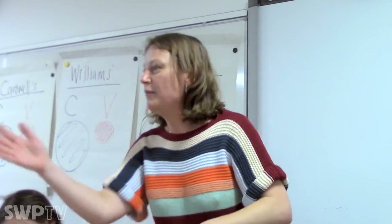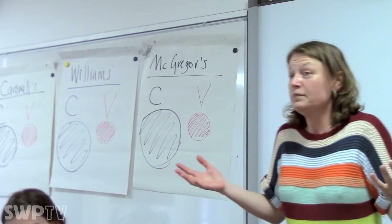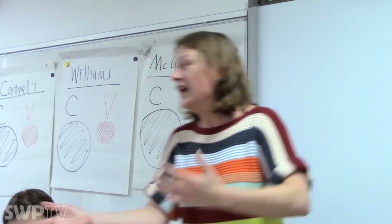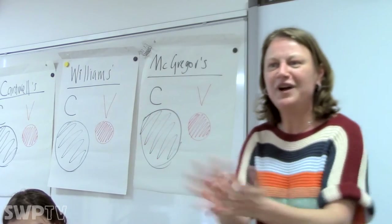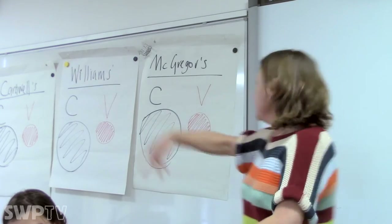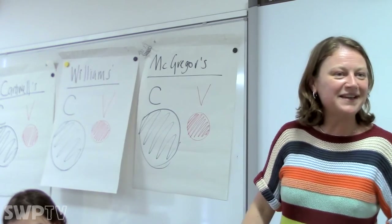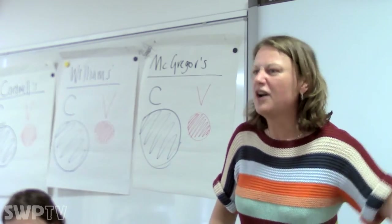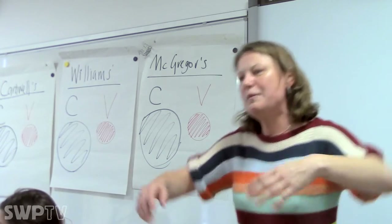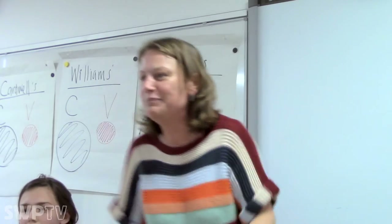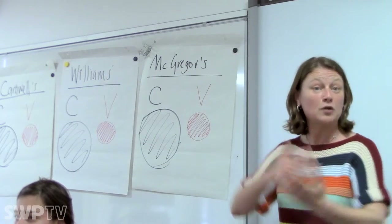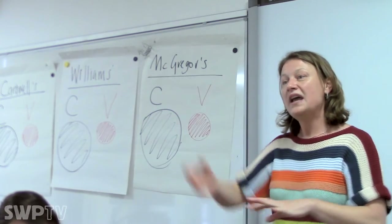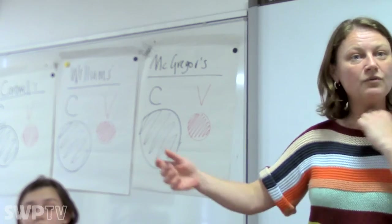Boom, slump, boom, slump — capitalists sometimes call it the business cycle. If it were just a simple boom-slump cycle you could sort of correct it each time: when it goes down, people like me take over the Williams' of the world, branch out into different areas, pick up workers at a cheaper price in the recession, put them back in, and correct the system.